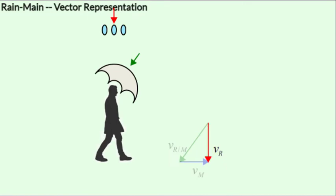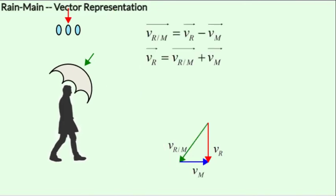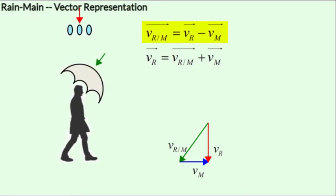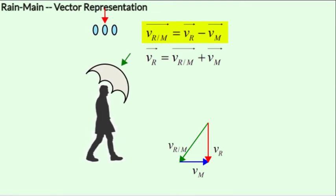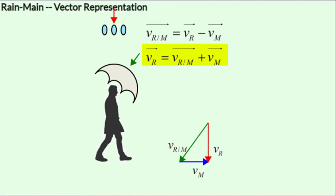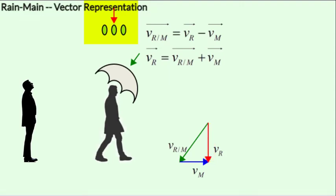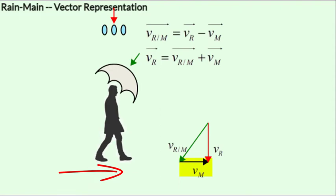Let's now form a vector equation using these three vectors. The vector vr with respect to m is vr minus vm by definition. We rearrange this so as not to have a negative sign in the equation, so we get vr equals vr with respect to m plus vm. This tells us that the resultant vector vr is the addition of the vectors vr with respect to m and vm. The vector vr is the direction of the rainfall as seen by a stationary observer. The vector vm is the direction in which the man moves. The vector vr with respect to m is the direction in which the moving man would tilt his umbrella, so due to the motion, he perceives the rain as approaching him in that direction.